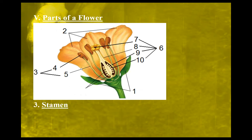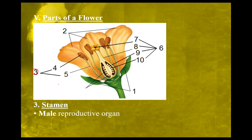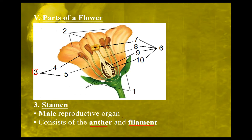Part three is the stamen, which actually consists of two separate parts — parts four and five. Generally speaking, the stamen is the male reproductive organ of the plant. It consists of the anther and the filament. So the stamen as a whole includes both the anther and the filament.